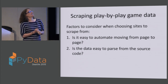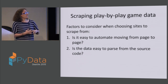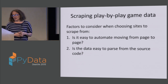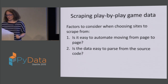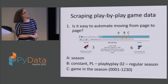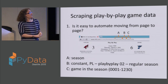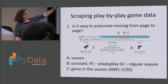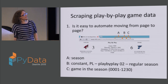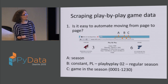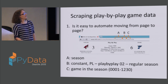When going about getting game data, I thought there were two questions to answer about where to pick it from: how easy is it to automate moving from page to page, and how easy is it to get the information I want out of the source code? For the play-by-play game data, I got that from NHL.com. They have a constant string for all their games, followed by a season indicator, another constant where PL stands for play-by-play data, and O2 indicates regular season. Then there's a four-digit code corresponding to the game in the season — there are 1,230 games in a season, so each one gets a number.